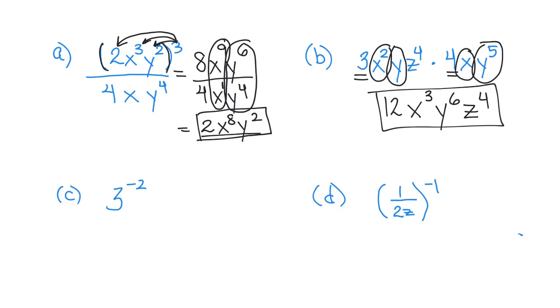And then 3 to the negative 2. Whenever you have negative exponents, to undo the inverse of a negative exponent is to take the reciprocal of the base. My base is 3, 3 over 1. So I take its reciprocal, which would be 1 over 3. And now the negative 2 is a positive exponent. So this would be the same as 1 over 9.